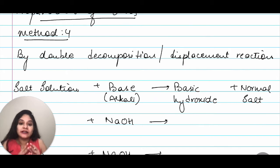Fourth method is by double decomposition or displacement reaction. We have a salt solution, we have an alkali which will give us a basic hydroxide and a normal salt. Don't worry about what is normal salt. When we are doing salts part, we would cover all the different types of salts that we have. Let's begin with the first one.